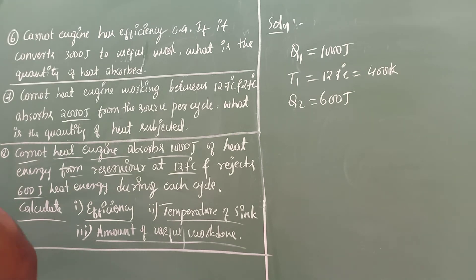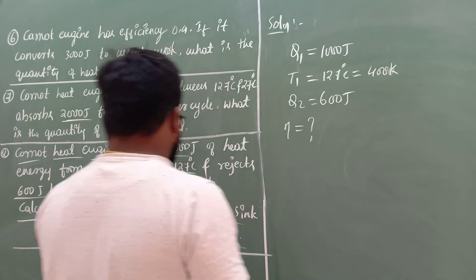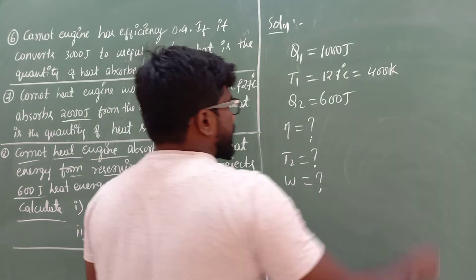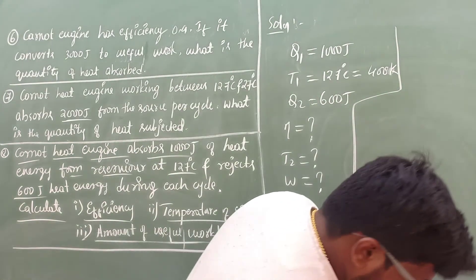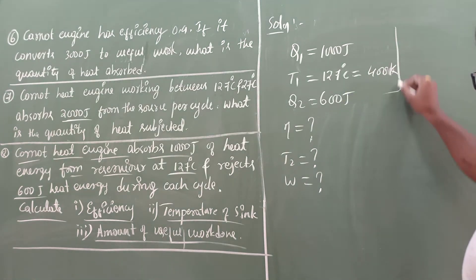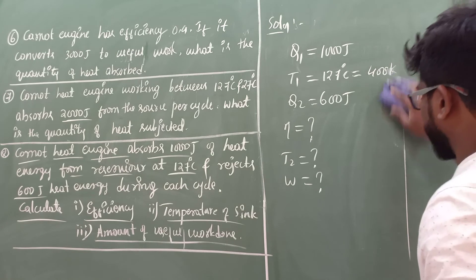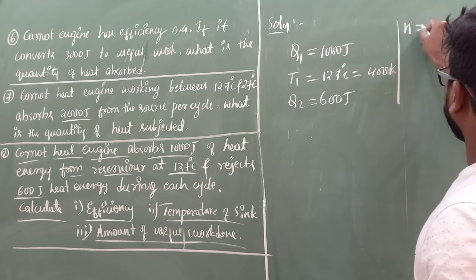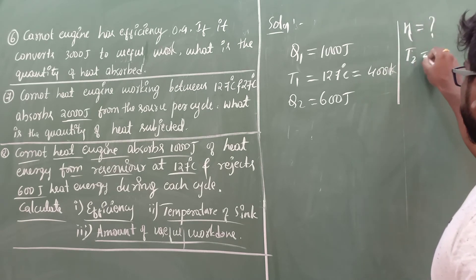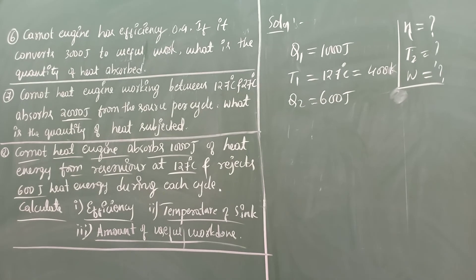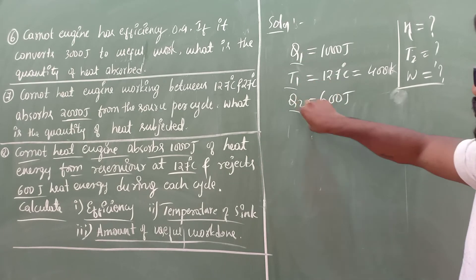Before solving, you must know the relevant formulas. The required quantities are eta, T2, and W. The formulas involve Q1, Q2, T1, and T2. Since Q1 and Q2 are known, we can find efficiency using eta equals 1 minus Q2 divided by Q1, or use the temperature relation to find T2 first.